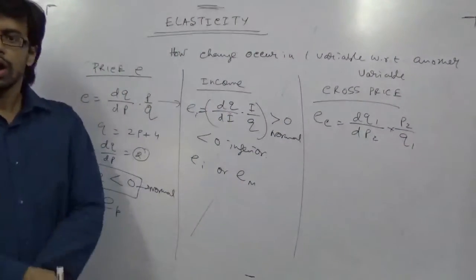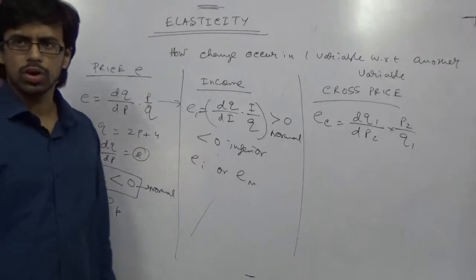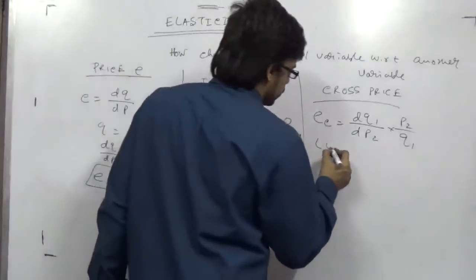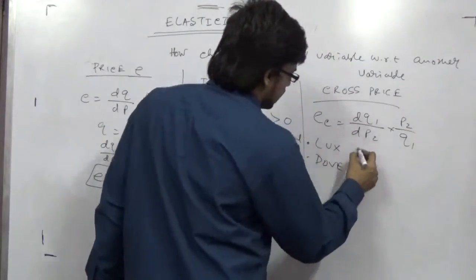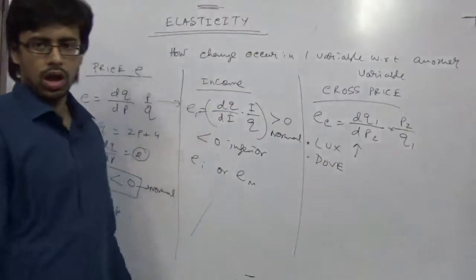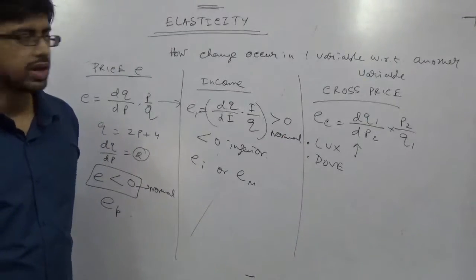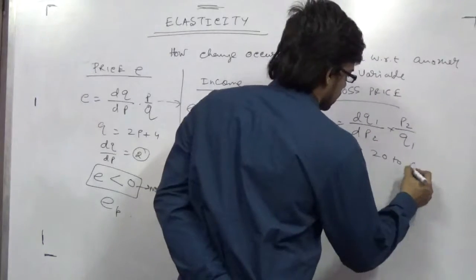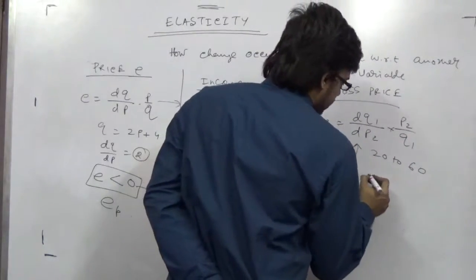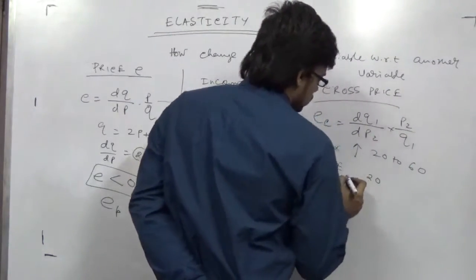So what happens if you think about any two close related products, for example Lux soap and Dove soap. So certainly if Lux increases their price, so people are not interested to buy Lux. Like they increased from 20 rupees to 60 rupees, and Dove is still at 20 rupees. So what will happen?